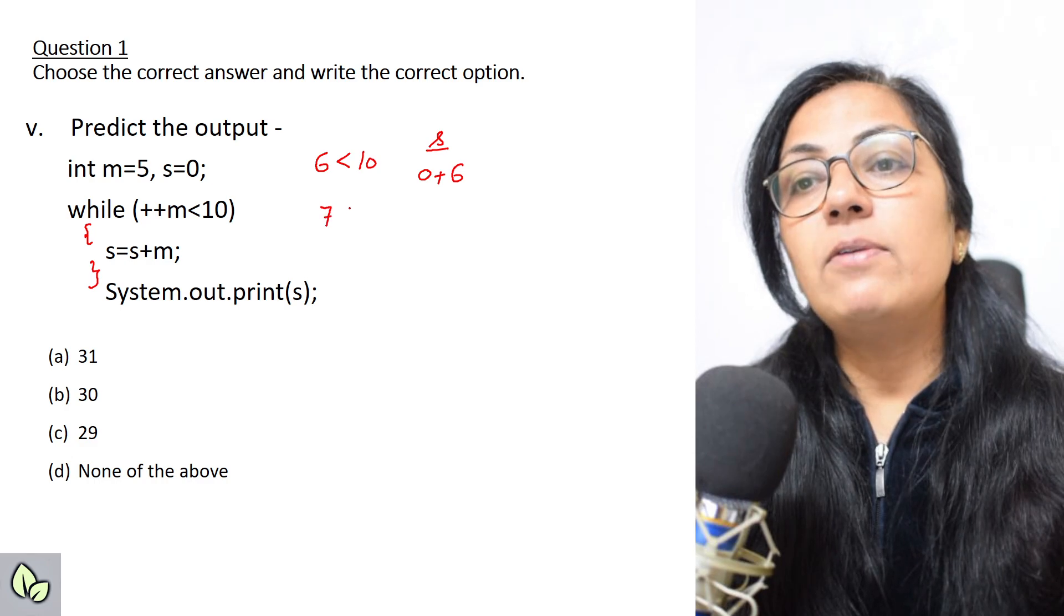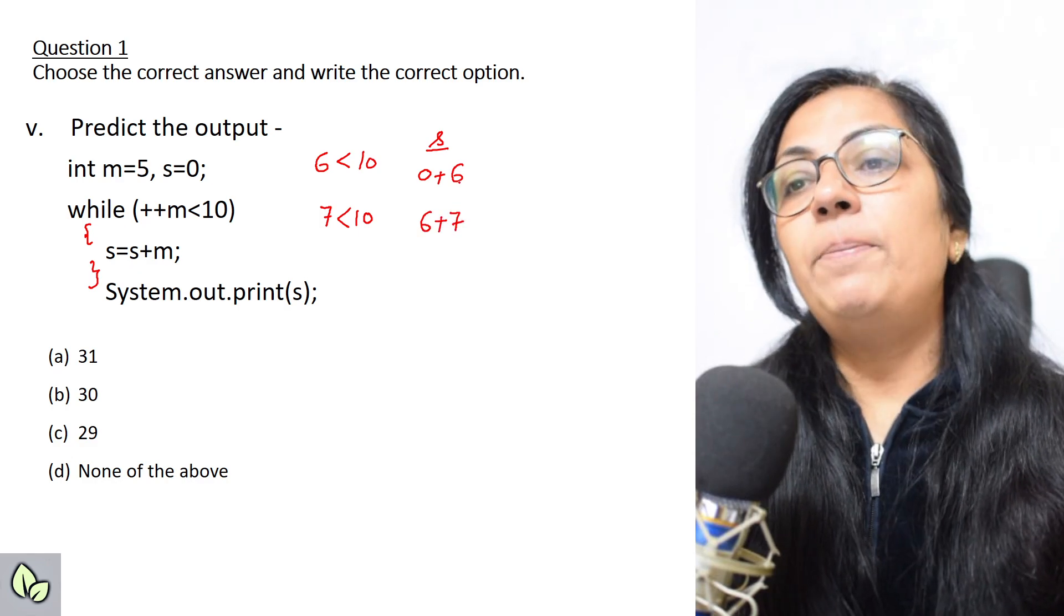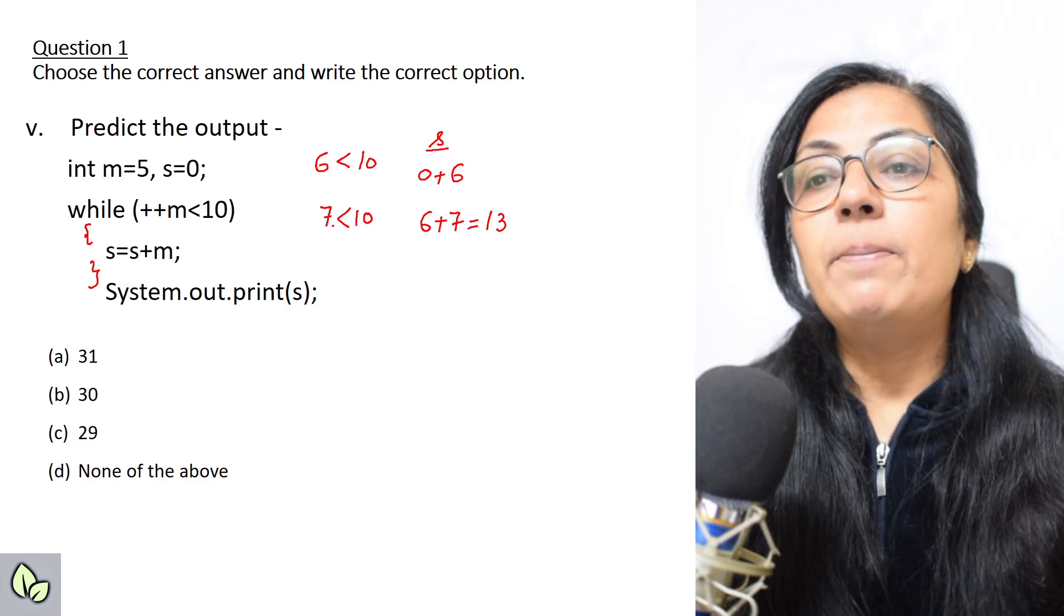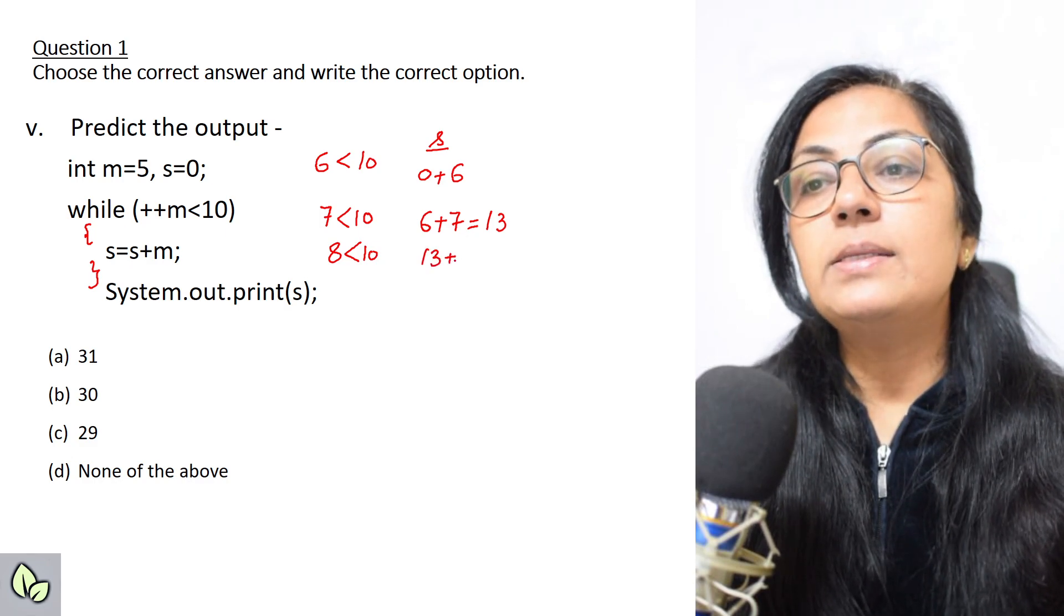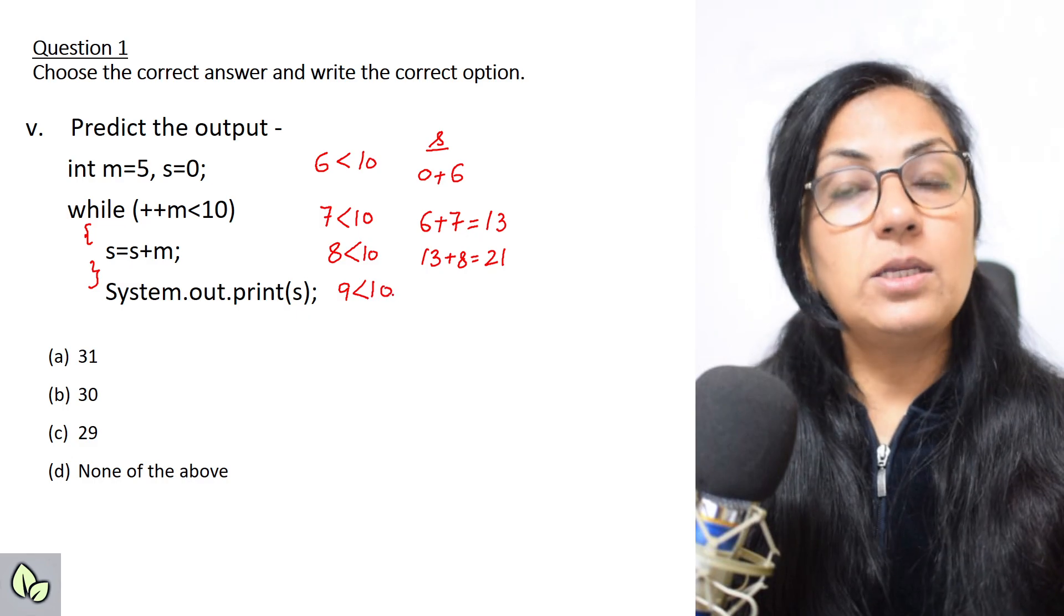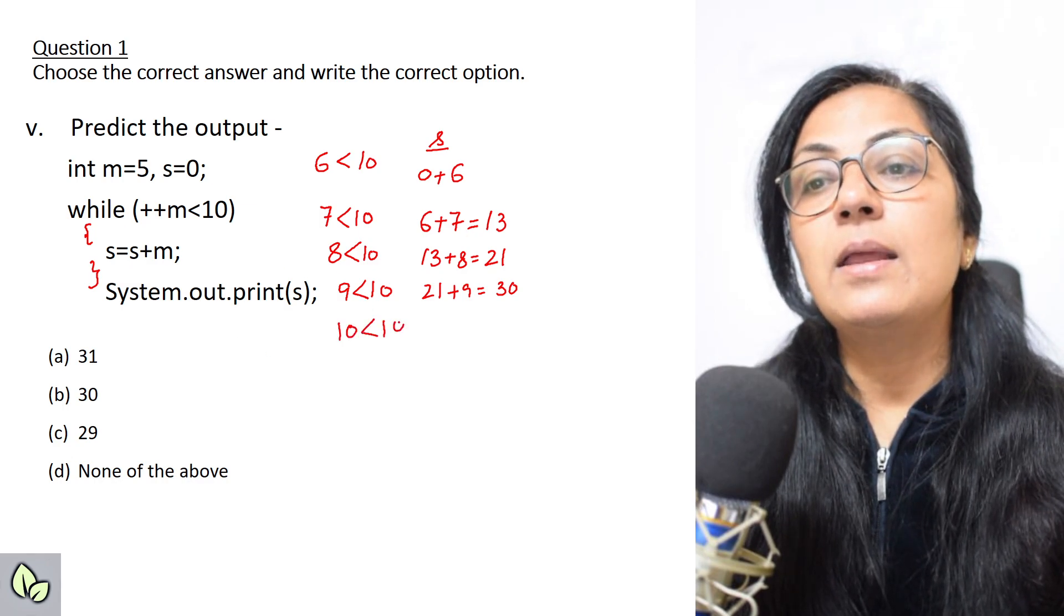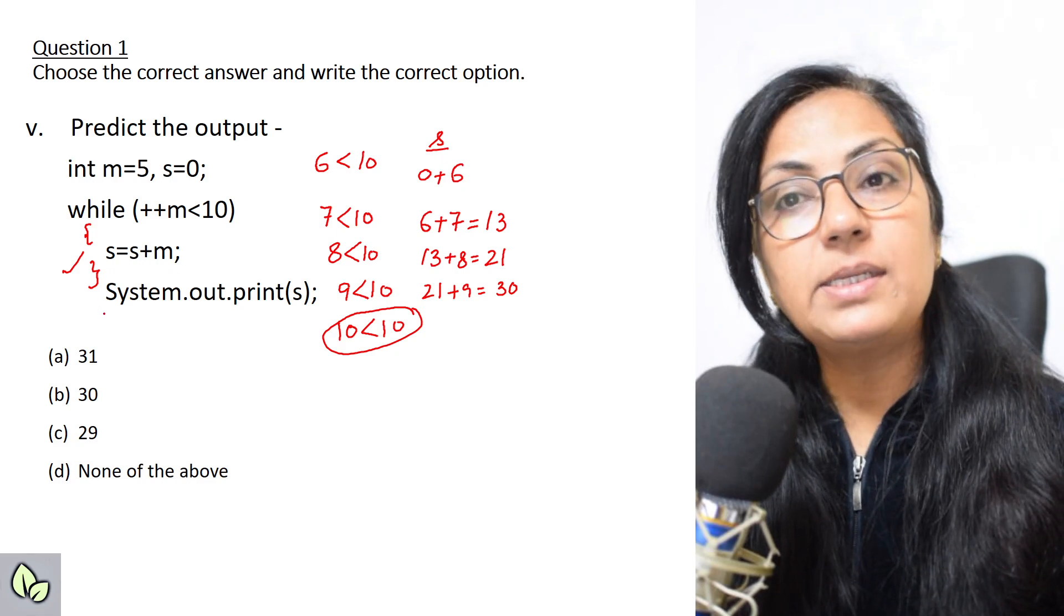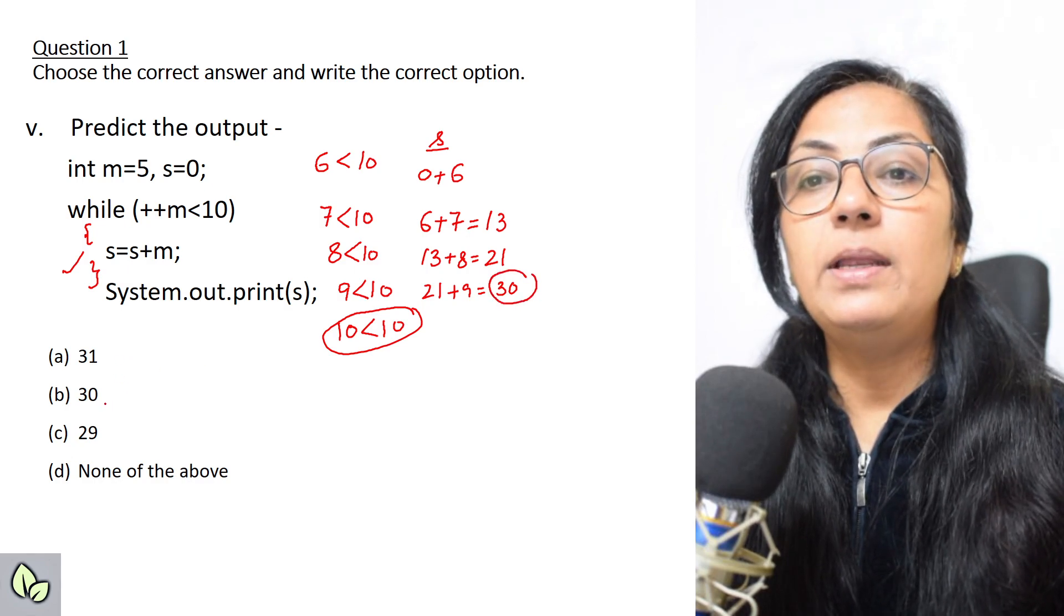Then again it will come back to while. Next time plus plus m becomes 7, less than 10, condition is true. S equals s plus m, 6 plus 7, the previous value of s was 6, now it will be 6 plus 7, that is 13. Next time plus plus m becomes 8, less than 10, still true, so 13 plus 8, that is 21. It becomes 9, less than 10, still true, 21 plus 9 is 30. Next time it will become 10, not less than 10, so the condition will become false. It will come out of the loop where the print statement is given. So print statement will print 30. What is the present value of s? It will print 30.